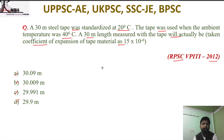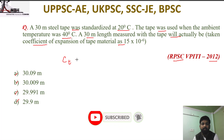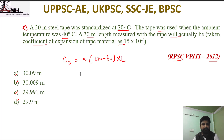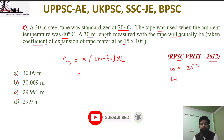We need to find the actual length. This involves temperature correction. The temperature correction formula is: CT = alpha × (Tm - T0) × L. The standard temperature given is 20 degrees centigrade and the field temperature is 40 degrees centigrade. The measured length is 30 meters.